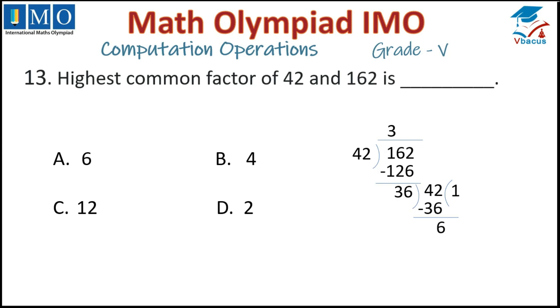Again take 6 as divisor and 36 as dividend. 6 sixes are 36. So what is your answer? Your HCF is 6. That is called highest common factor. Where is that option? That is in option A. So option A is correct.